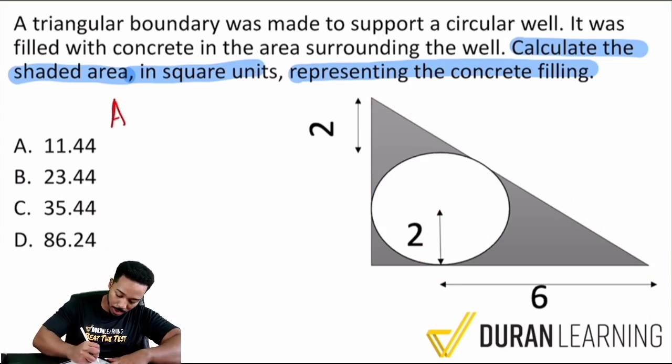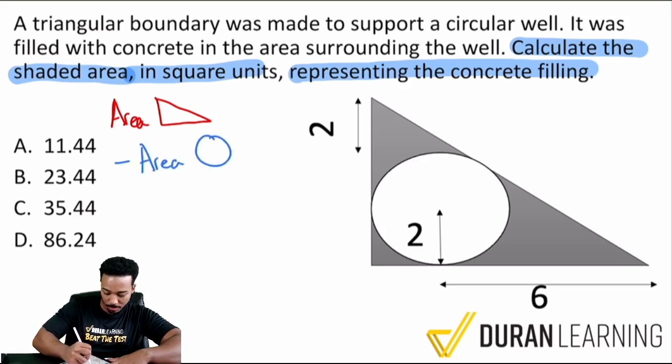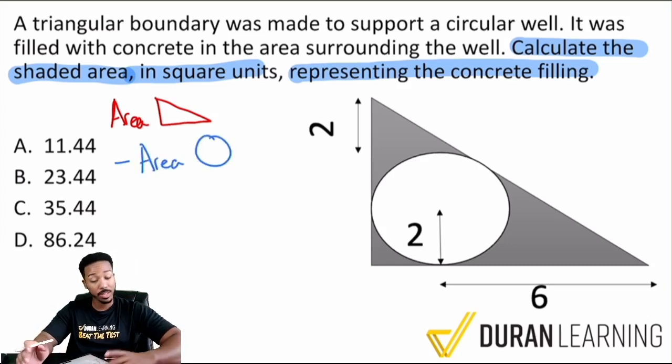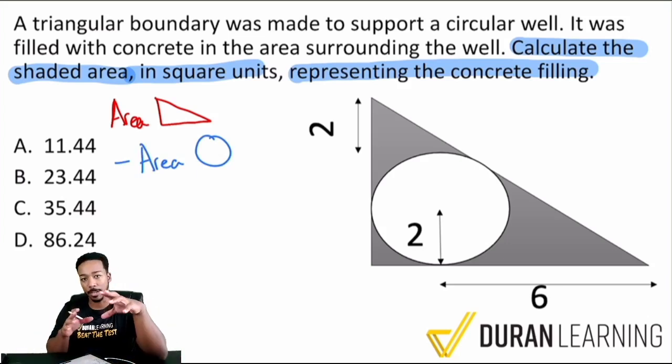We're going to go ahead and find the area of that big old triangle there. And then we're going to subtract the area of the circle and we're good. That's it right there. That's the idea. So if you follow it along up to this point, then you can see that this is a doable problem. The only question is, how do we calculate the area of the triangle? How do we calculate the area of the circle? Then we subtract and we're done.